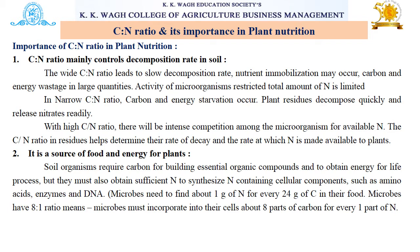A second importance of CN ratio is as a source of food and energy. Soil organisms require carbon for building essential organic compounds and to obtain energy for life processes, but they must also obtain sufficient nitrogen to synthesize nitrogen-containing cellular components such as amino acids, enzymes and DNA. Microbes need about 1 gram of nitrogen for every 24 grams of carbon in their food, incorporating about 8 parts of carbon for every one part of nitrogen into their cells.